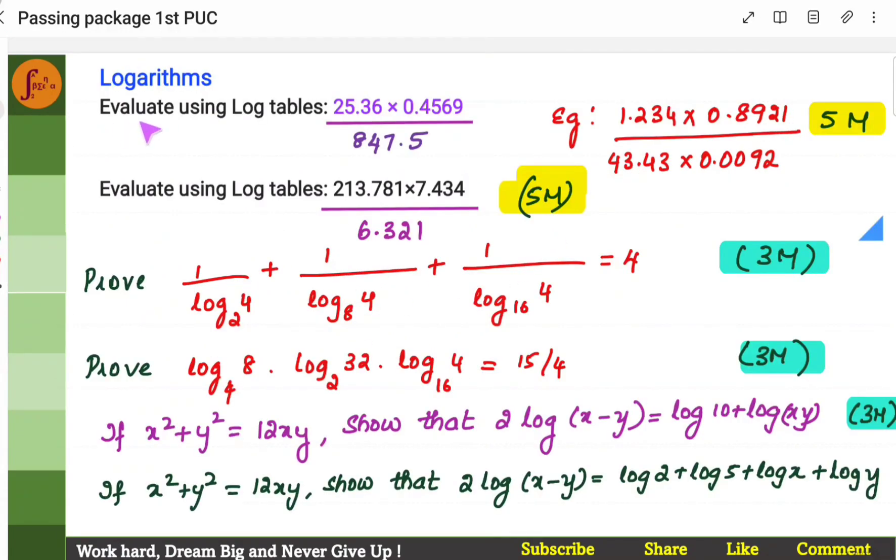Then, logarithms. As I said, an important chapter. So, this is a frequently occurred question in the previous question papers. You have multiplication and you have division. Using log tables, we'll have to solve this problems. So, this is a 5 marker. If you can practice this very well, this is a really easy scorer. Then, there are problems where you'll have to prove left-hand side is equal to right-hand side like this. You'll have to prove this.